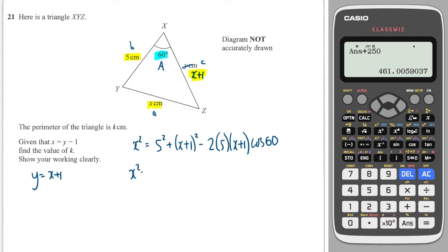Let's simplify. That's 25. X plus 1 all squared is x squared plus an x plus another x, plus 1 times 1 is 1.